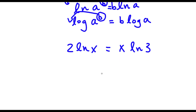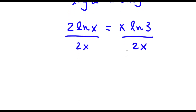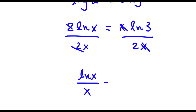Now I'm going to divide by 2x on both sides. So from my right hand side, these two x's will cancel out. From my left hand side, these two 2's will cancel out. So I'd be left with ln x over x is equal to ln 3 over 2.